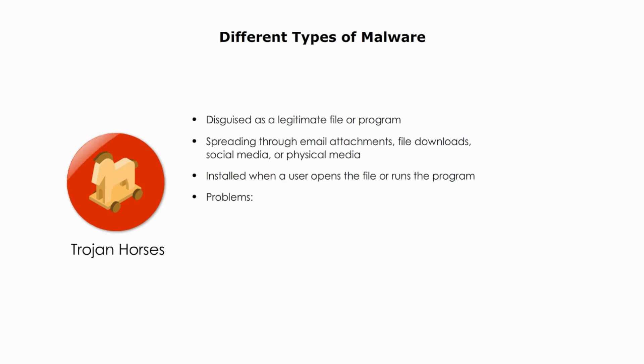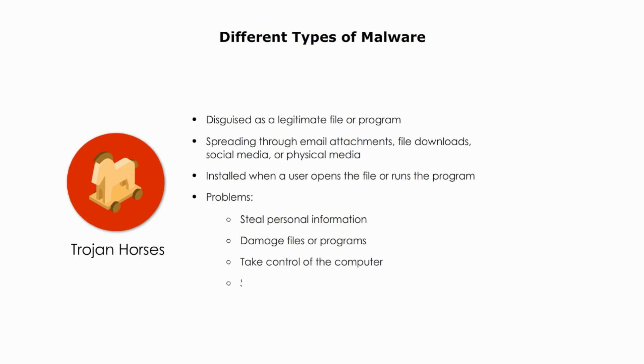Once installed, a trojan horse can do a variety of things such as steal personal information, damage files or programs, take control of a computer, and spread to other computers on the network.